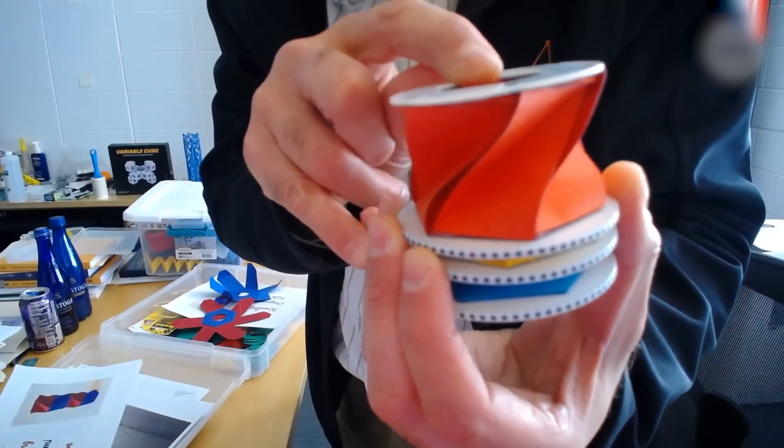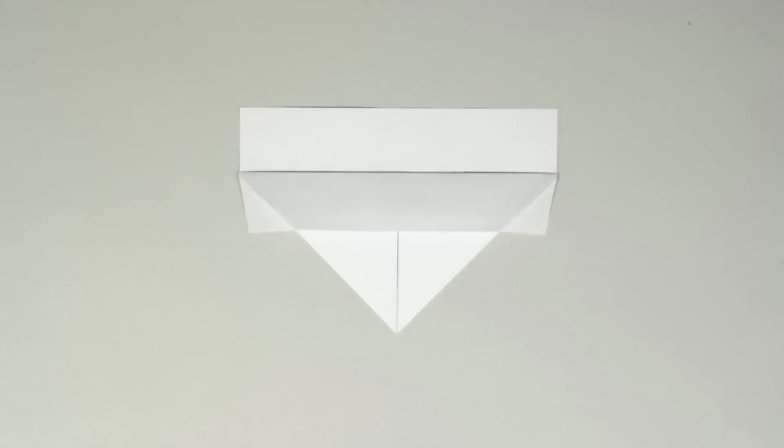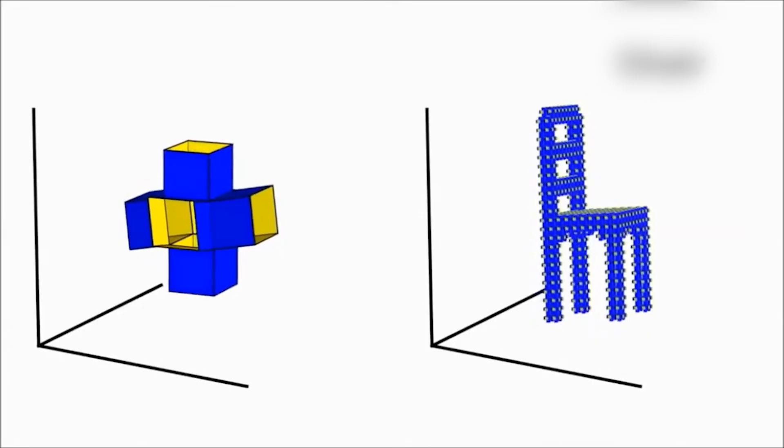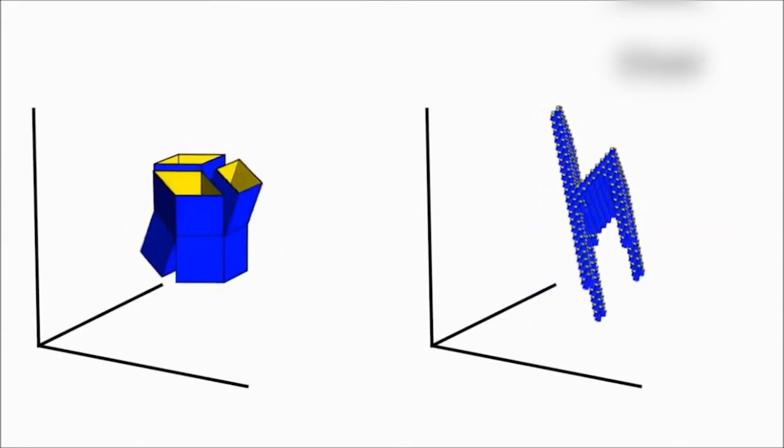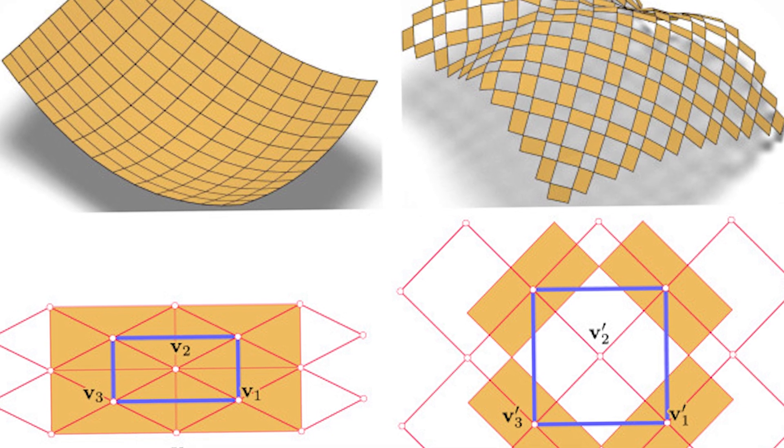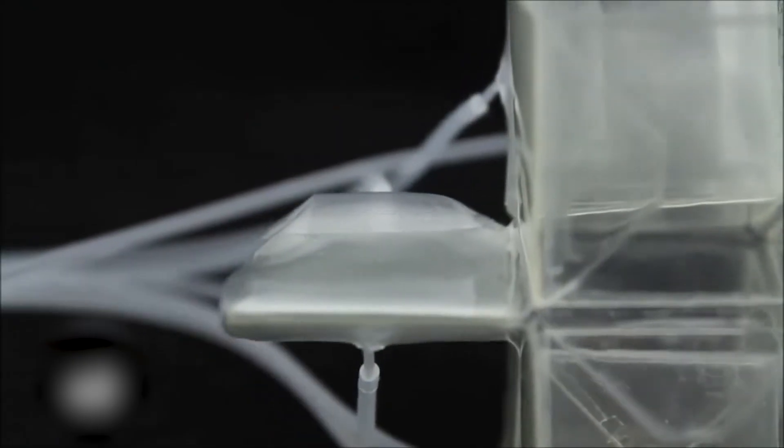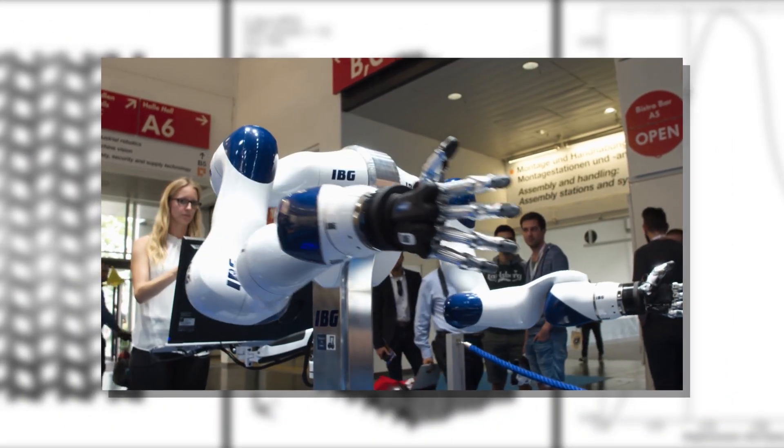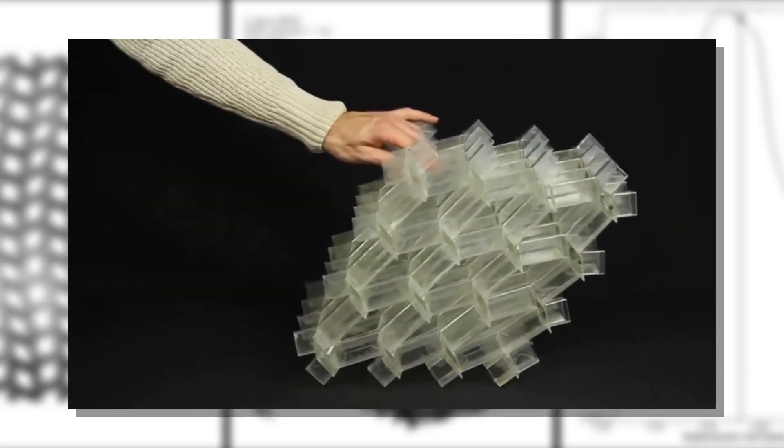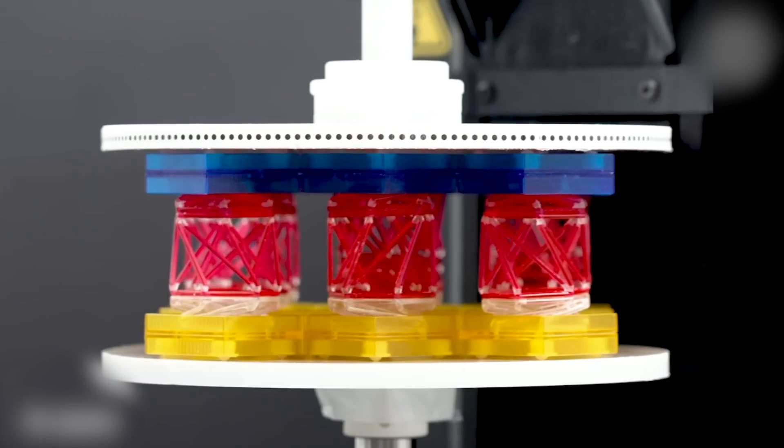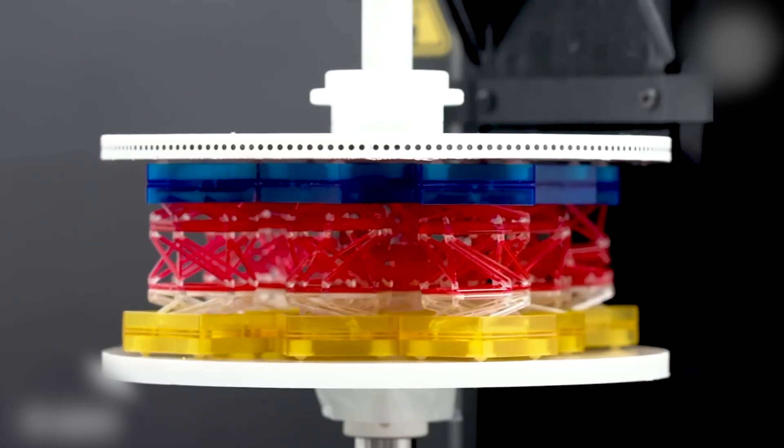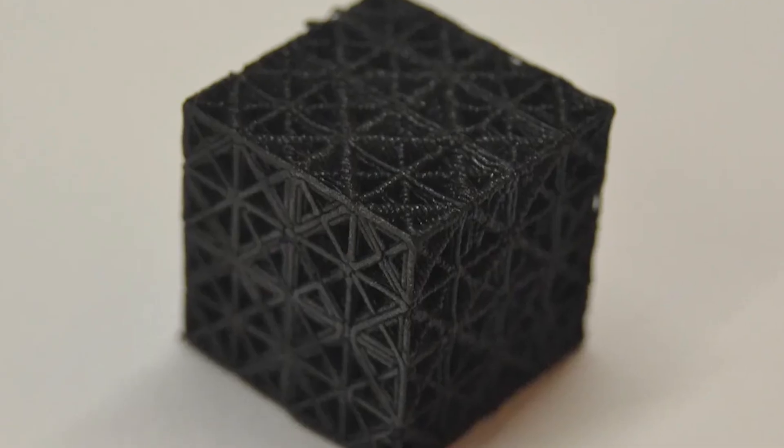All of this ties into a much bigger trend: programmable matter. It's the dream of having physical objects that can reconfigure themselves, changing shape, texture, or even function, based on what they're told to do. We've seen early experiments with robotic skins and shape-shifting surfaces. However, metabots bring us one step closer to making that reality modular, scalable, and magnetically steerable.